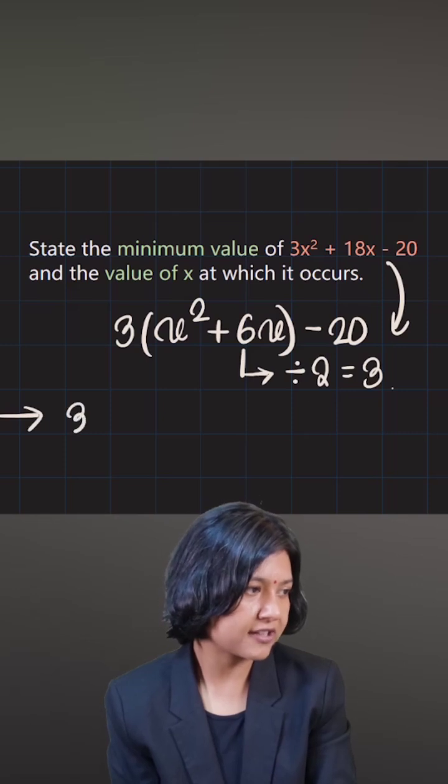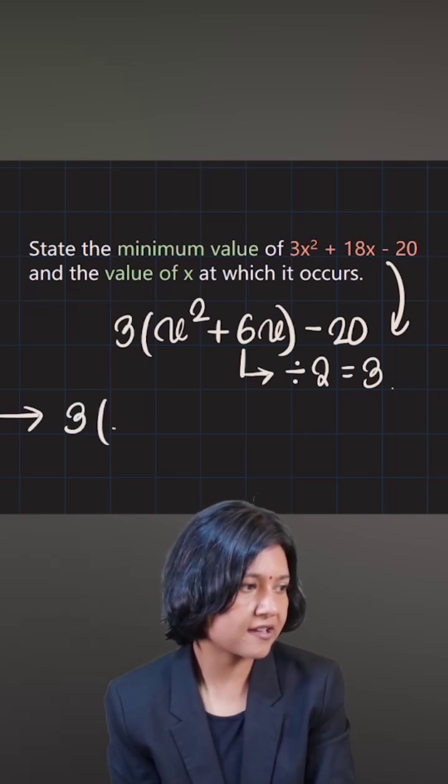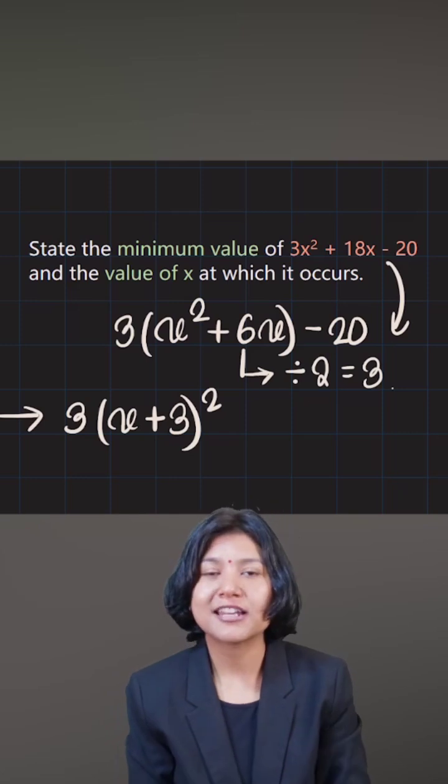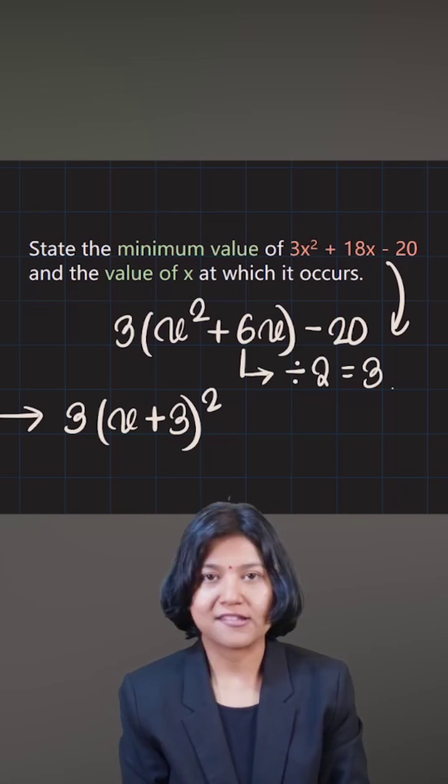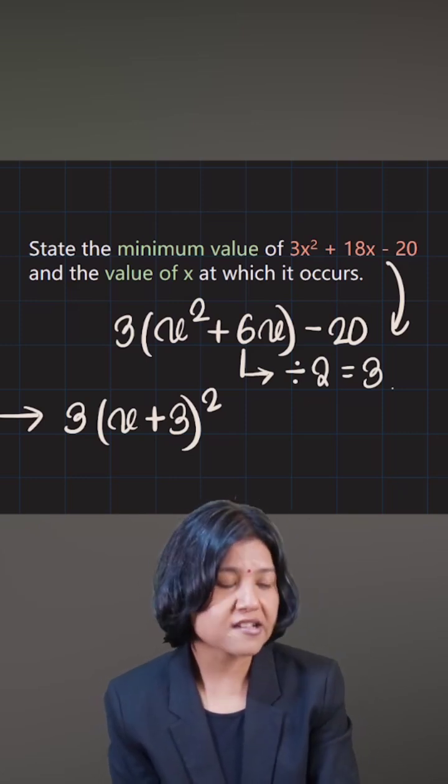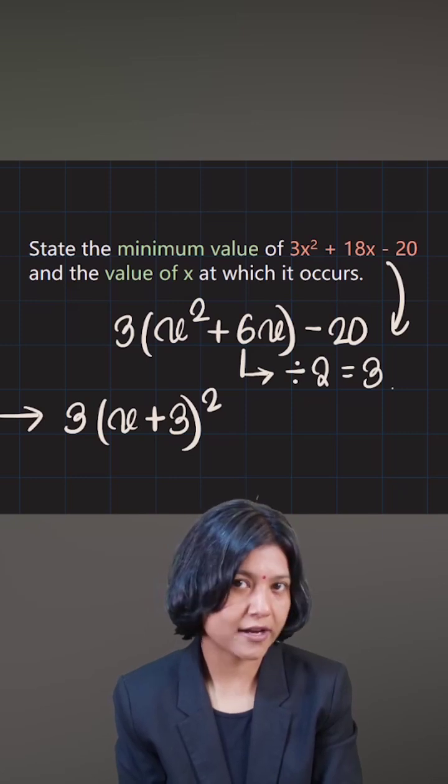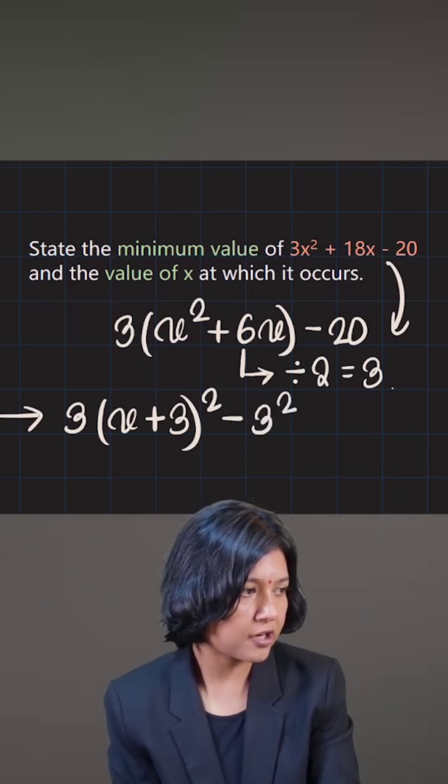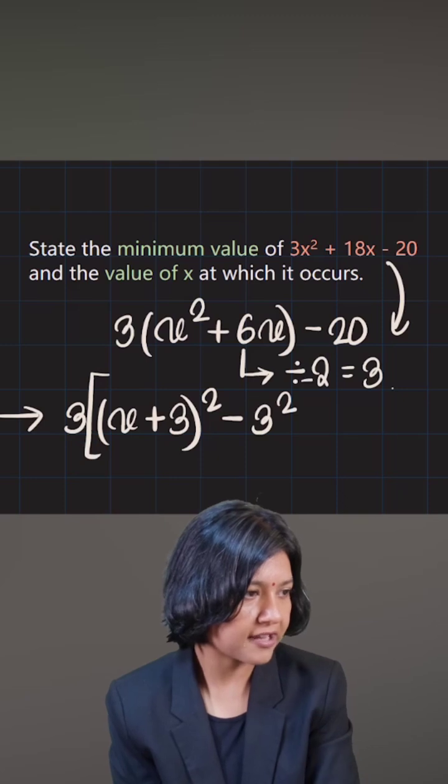So which means instead of writing x squared plus 6x, I'll write this as x plus 3 the whole square, telling me that I have additionally included the square of 3 inside this bracket. And now because I have added this plus 3 square additionally, I need to subtract it outside, and note that this is all happening inside the bracket that 3 has multiplied.